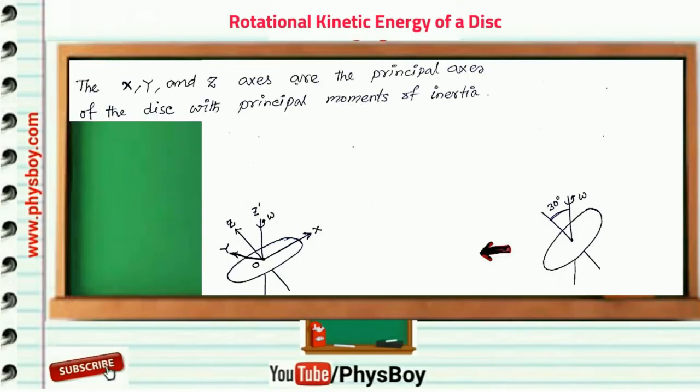Now the X axis, Y axis, and Z axis are the principal axes of the disk with principal moment of inertia about the X axis is Ixx, which is equal to 1/4 MR squared.